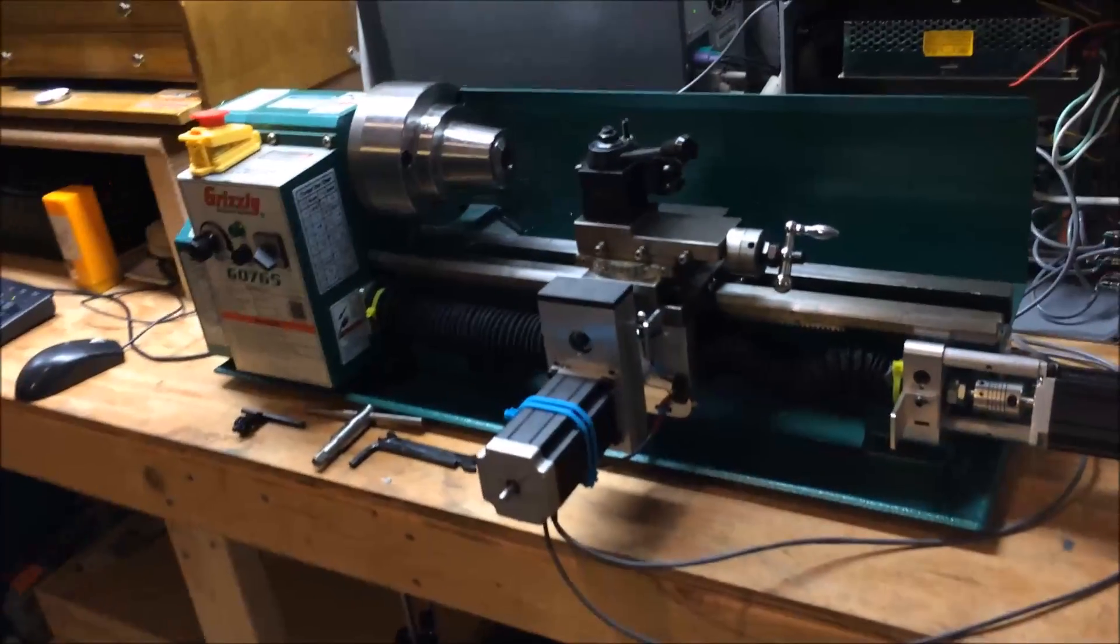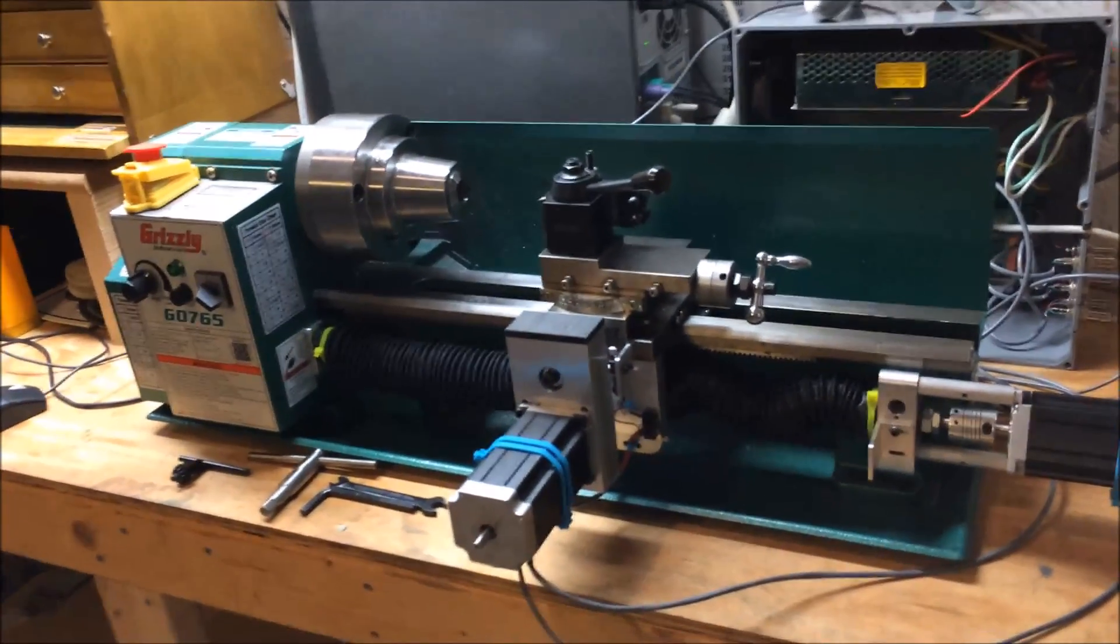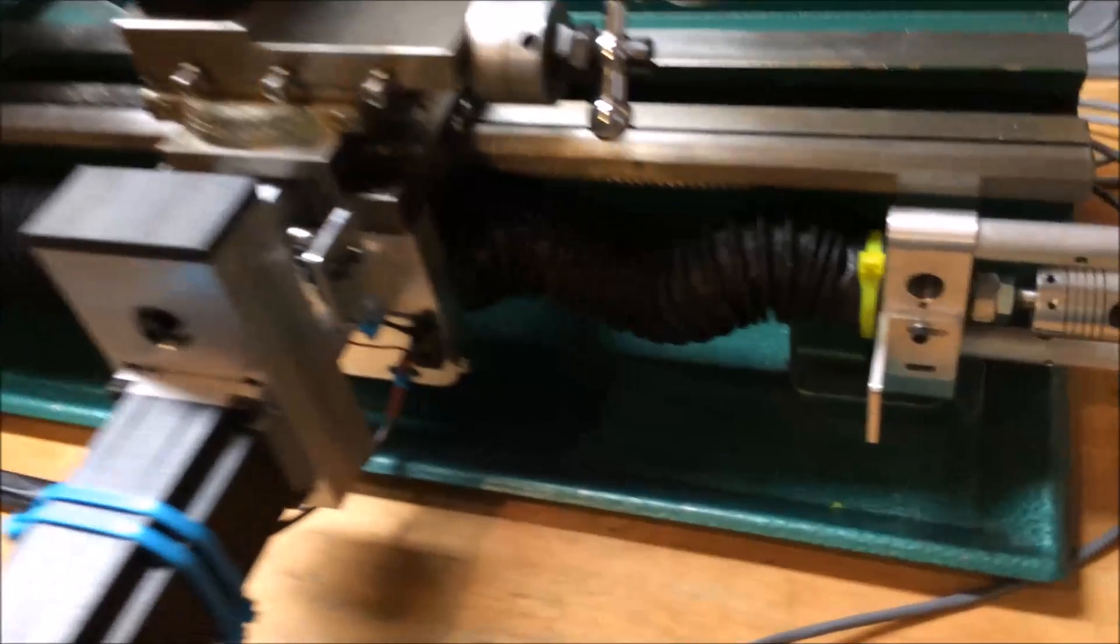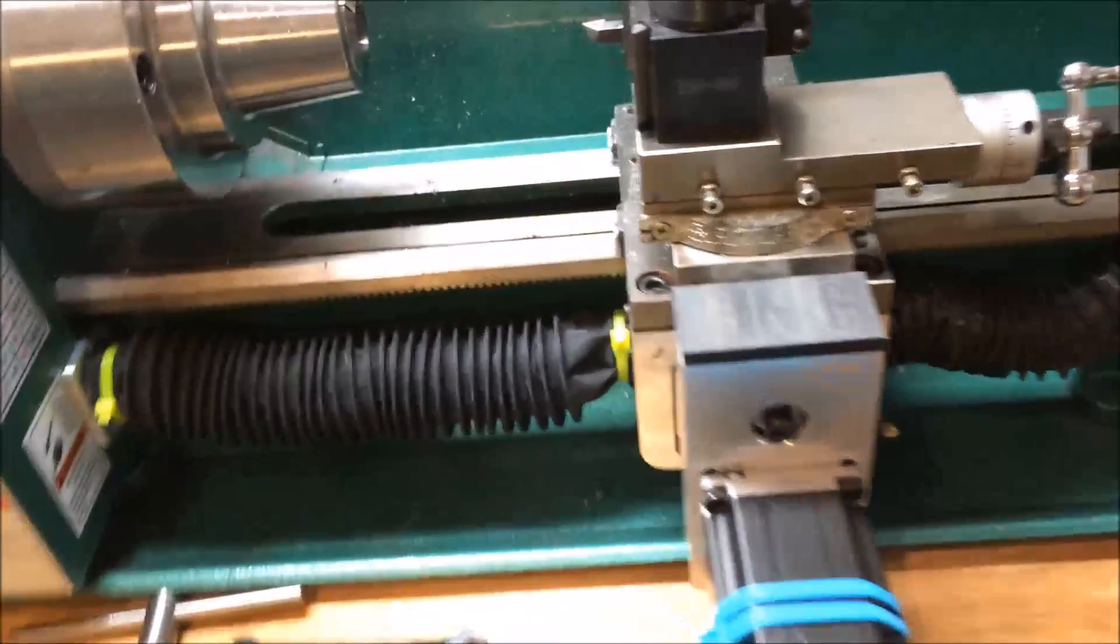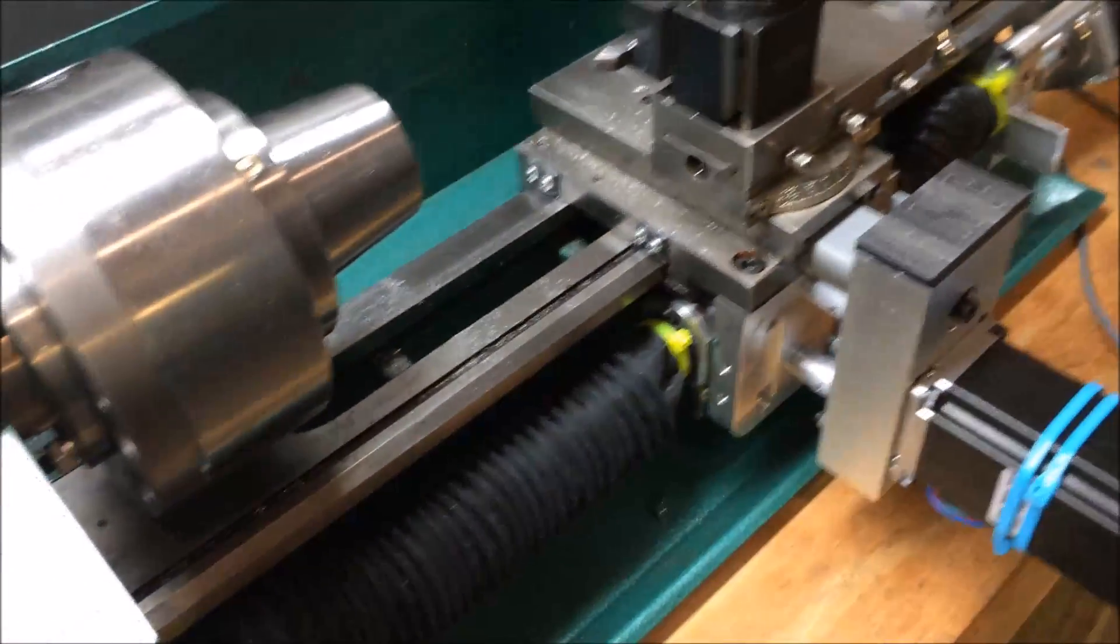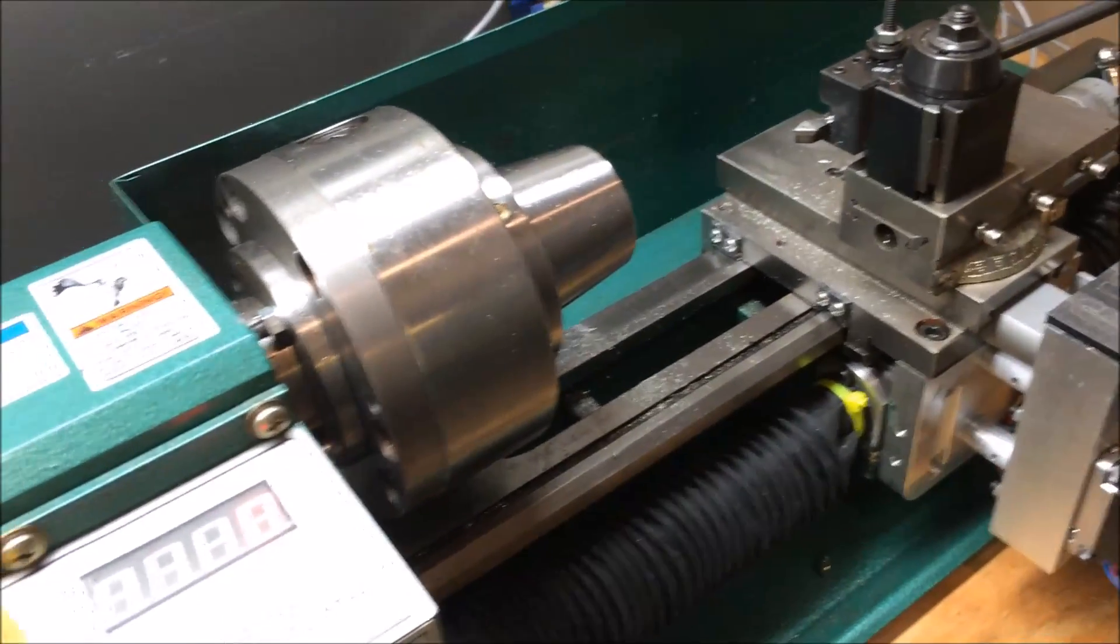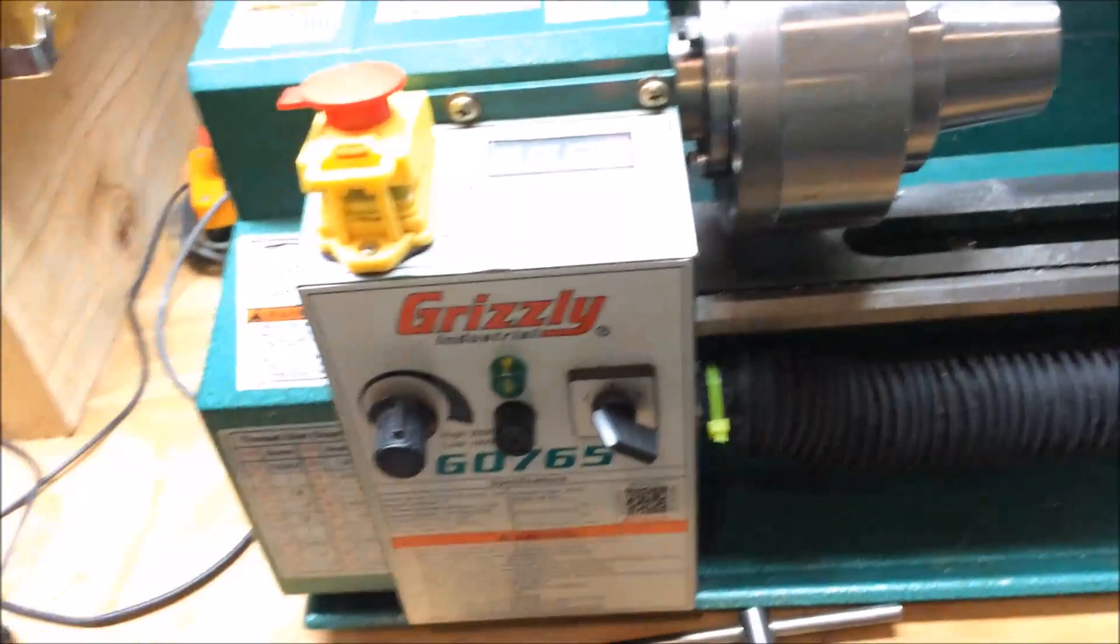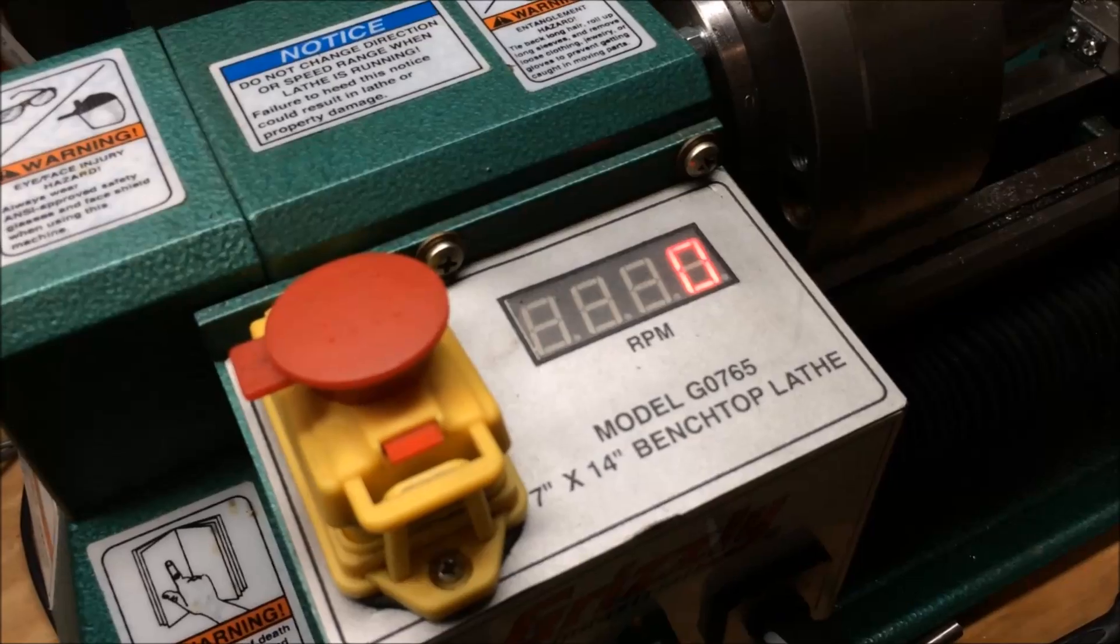Hey there, YouTube. I am finally getting my CNC conversion on my Grizzly G0765 lathe up and running. I'm really happy with the way it's working out. I think I have a really nice design here for the kit, but I'm not going to talk about that a whole lot right now. I'll discuss that in a different video. Right now, I want to talk about spindle feedback on your 7x10, 7x12, 7x14 CNC lathe conversion.